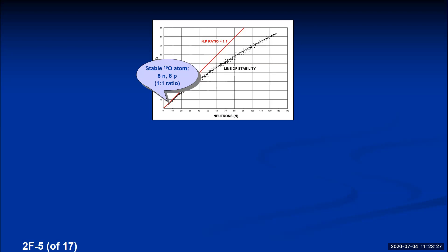At the very end of the line of stability, around 80 protons, a mercury atom with 120 neutrons has a ratio of 120:80 = 1.5:1. So atoms at the end of the line of stability have about a 1.5:1 neutron-to-proton ratio. If you're somewhere in the middle of the line, the ratio of neutrons to protons is somewhere between 1:1 and 1.5:1.